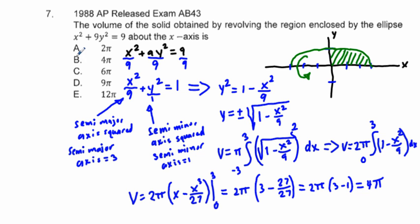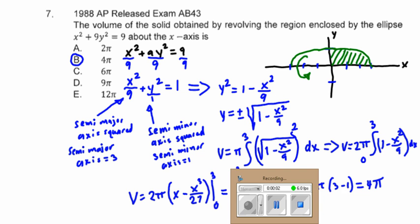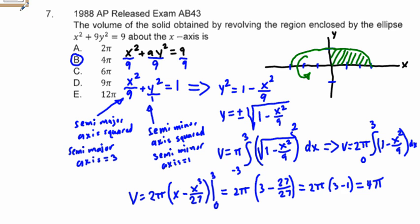Normally on the non-calculator portion of the exam, you'll have an average of 2 minutes per problem. This is going to take longer than 2 minutes, even under the best circumstances. But if it's a problem like this that you can do, and you're familiar with ellipses enough, just go ahead and go for it. It's going to be worth your time. Good luck on your AP exam, and thanks for viewing.